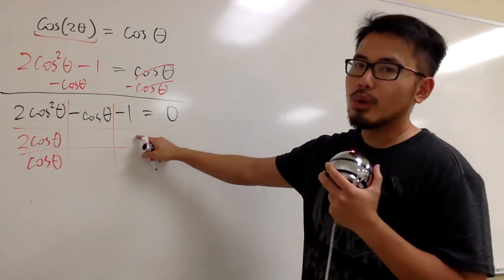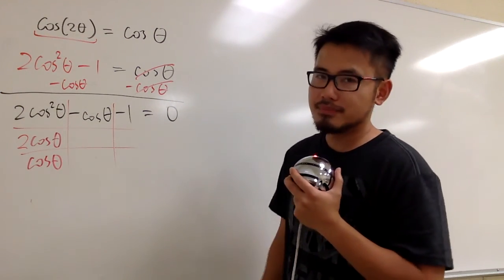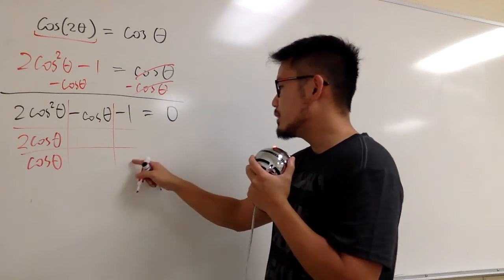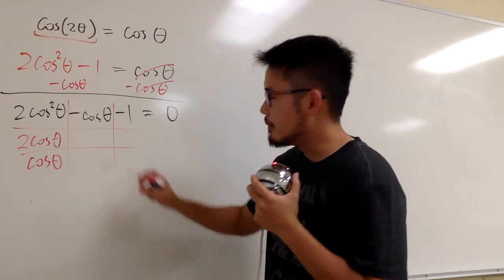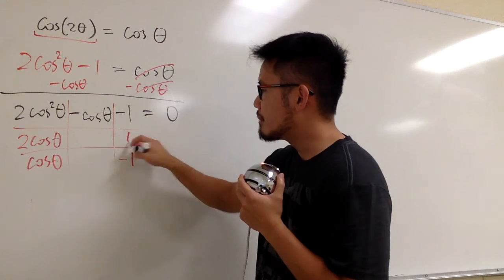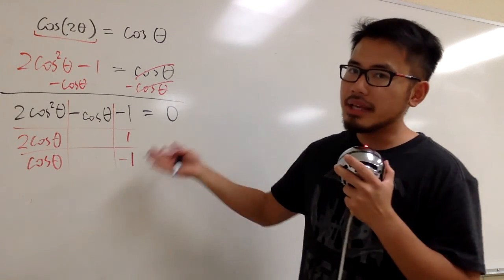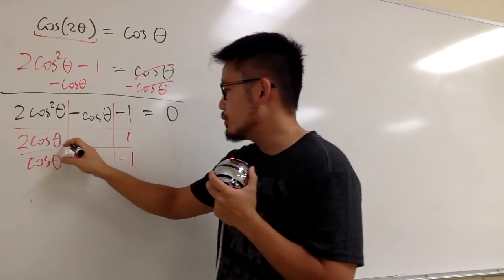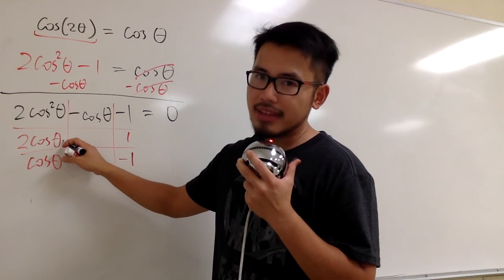And then, right here, what times what will give me negative 1? Well, negative 1 times 1, right? But then, be sure you put the negative 1 here, and then the positive 1 here. Why is this correct? We will do a quick check. We multiply diagonally to check.